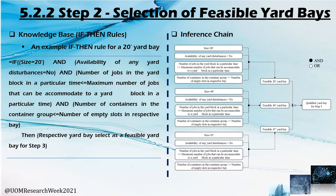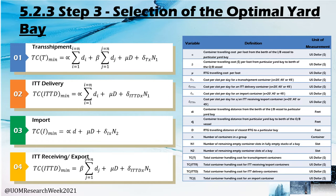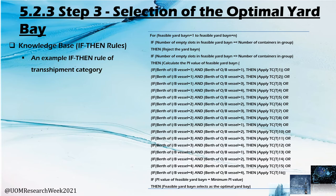You can see the inference chain of step two — that is, the way in which feasible yard bays are selected. To select the optimal yard bay in step three, we developed four types of performance indicators. These performance indicators were developed considering the operation of each container category and to calculate the total container handling cost from berth to yard. The yard bay with the least container handling cost is assigned as the optimal yard bay to stack containers. Other container categories also contain this kind of if-then rules in the step three knowledge base.